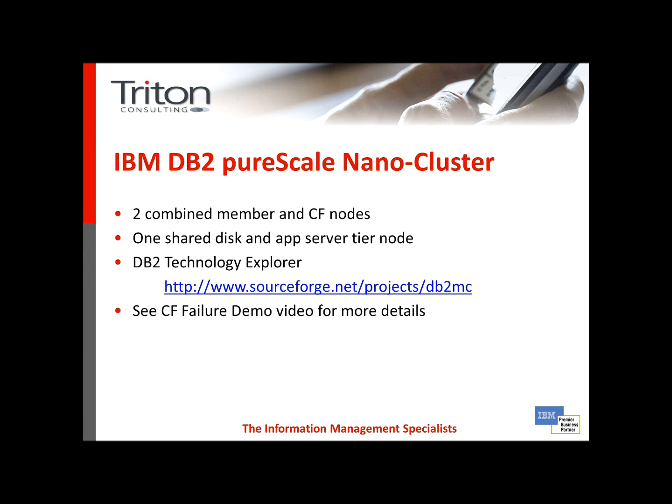The platform we're going to use for this live demonstration is the IBM DB2 PureScale Nano cluster. This is made up of two combined member and CF nodes running on a small footprint — in our case, dual-core Atom processors. We'll be using one shared disk through GPFS and iSCSI, which combines GPFS functionality with application server functionality.